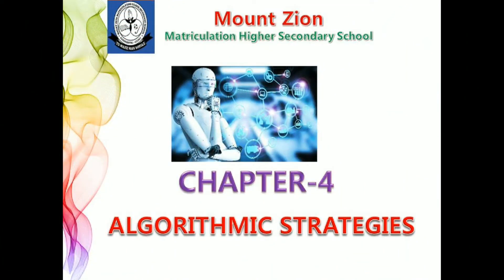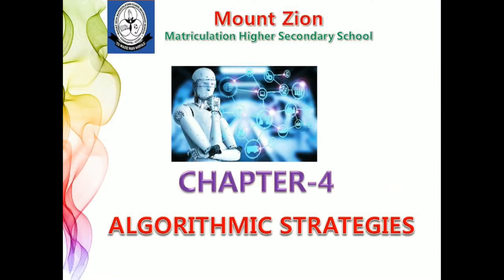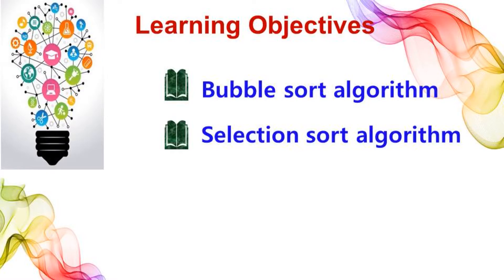Good morning students. Today we are going to see Chapter 4: Algorithmic Strategies. An algorithm is a strategy that always guarantees the correct answer, whereas a strategy might yield incorrect results. In this session we are going to see what is bubble sort algorithm and what is selection sort algorithm.